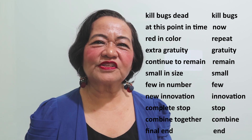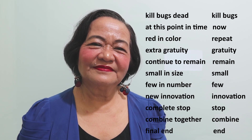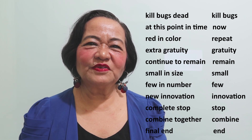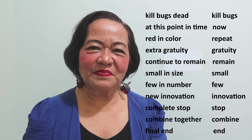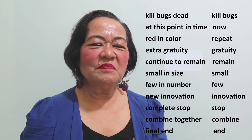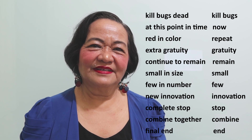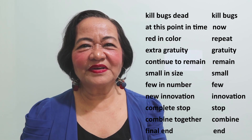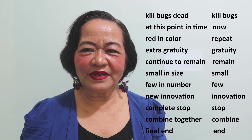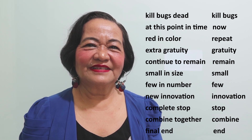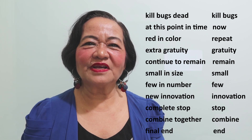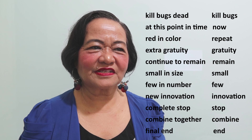'Complete stop' — when you say stop, it's really a complete halt, so just say 'stop.' 'Combine together' — either 'combine' or 'together,' because it is implied that when you are together, you are combined, and when you are combined, the items are together. So use 'combined.'